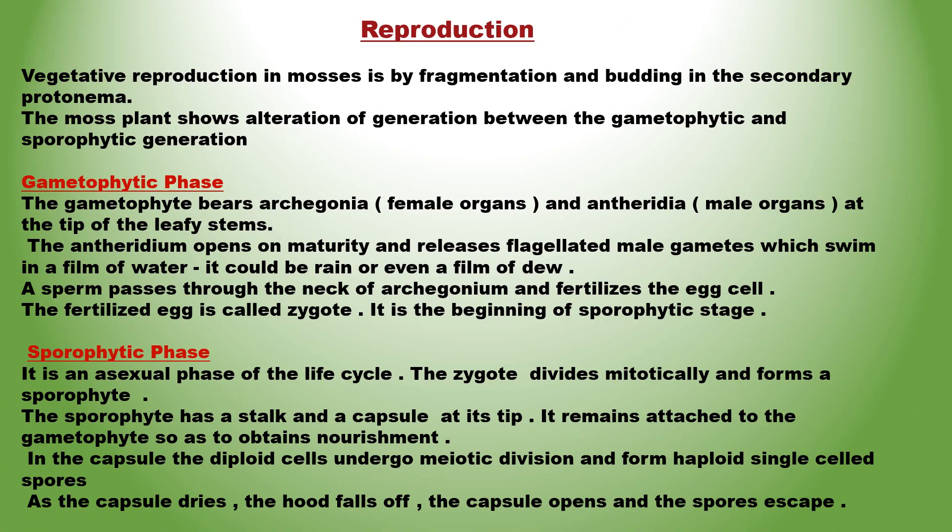Vegetative reproduction in mosses is by fragmentation and budding of the secondary protonema. Examples: Funaria, Polytrichum, Sphagnum, etc. The gametophyte bears archegonia, the female organs, and antheridia, the male organs, at the tip of the leafy stems.